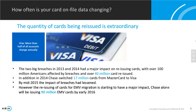By mid-2015, the impact of the breaches had lessened, but now there's the reissuing of EMV cards starting to have a major impact. Chase alone issued 90 million EMV cards by early 2016, and that's just Chase — there are about 8,000 issuing banks in the U.S. It's great to have Keeley here from Chase because she's got real-world examples of what they're seeing. From the ARIA perspective, we have a number of clients we're helping deal with this as well, since it's a problem the whole industry is facing.